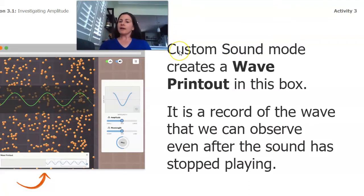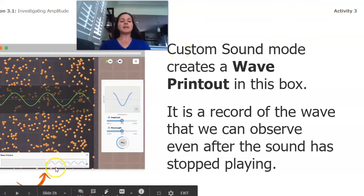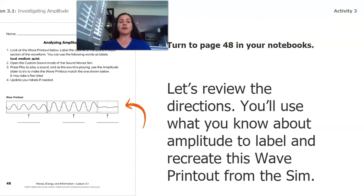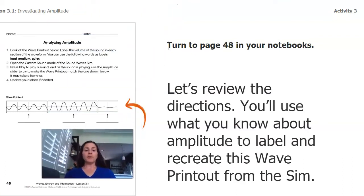Now we were in that custom sound mode and you might have noticed at the bottom of the box, there was what was called a wave printout. And that was a record of the wave that we could observe even after the sound stopped playing. Now, if you have your notebook, go to page 48. If you don't, that's okay. You can look at mine and just jot down your answers on a piece of paper. So let's look at the directions. You're going to use what you know about amplitude, that how big or how loud a wave is, to label and recreate this wave printout from the sim.